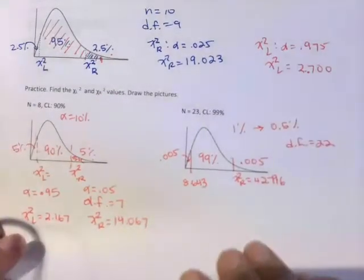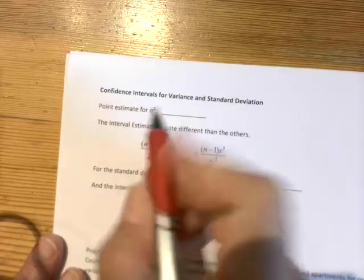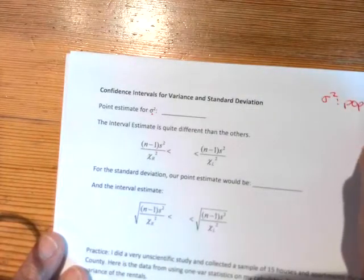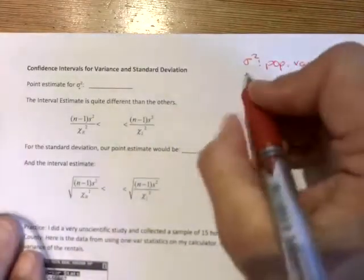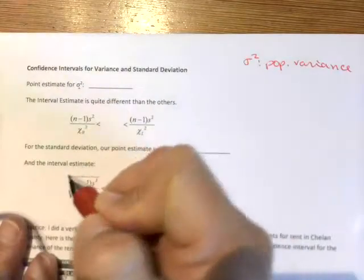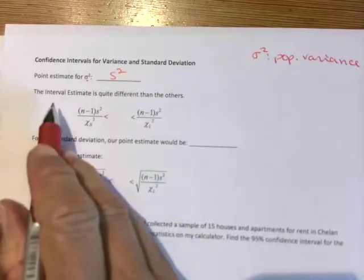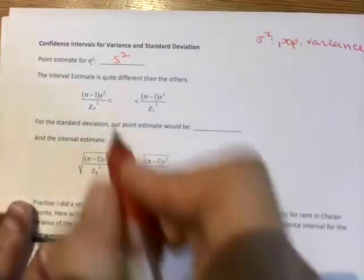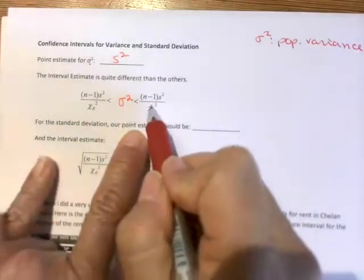So that's how we find our critical values, so let's go ahead and do the confidence interval. So we need a point estimate, so for estimating variance, so remember sigma squared, this is the population variance, the thing we're going to be estimating, so the point estimate would be the variance for our sample, so that would just be s-squared. And then the interval estimate, so this looks completely different than the others that we've done so far.